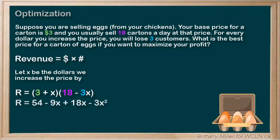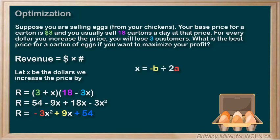We expand that to get R equals 54 minus 9X plus 18X minus 3X squared, and then we collect like terms to get R equals negative 3X squared plus 9X plus 54. This is the quadratic we want to find the maximum of, and there are no constraints this time to worry about. So let's use negative B over 2A to find the vertex: X equals negative 9 over 2 times negative 3, which is negative 9 divided by negative 6, which is 1.5.